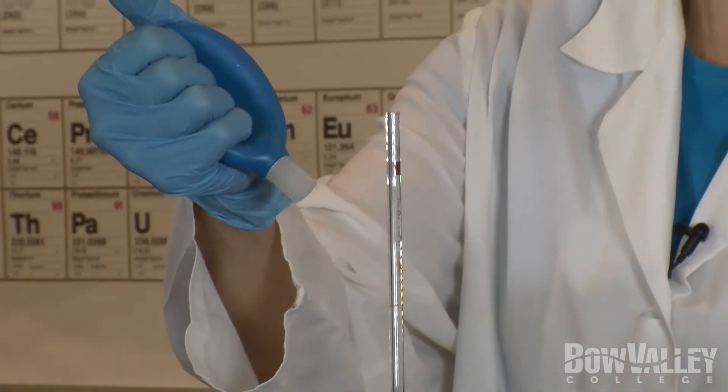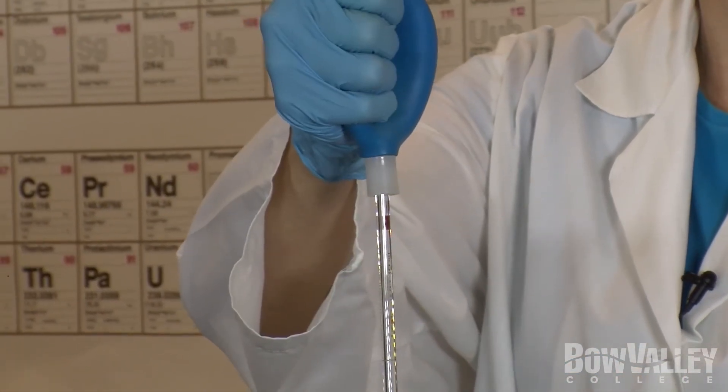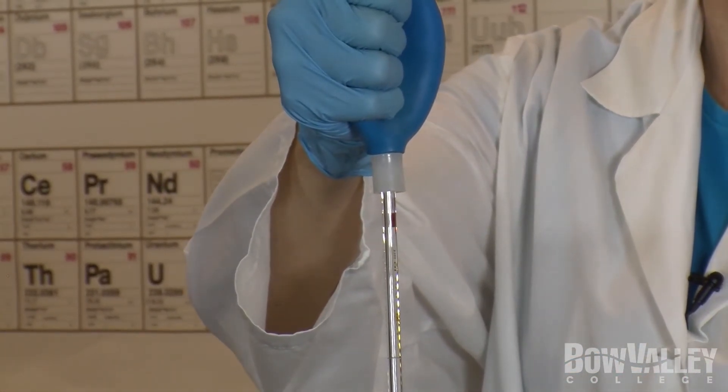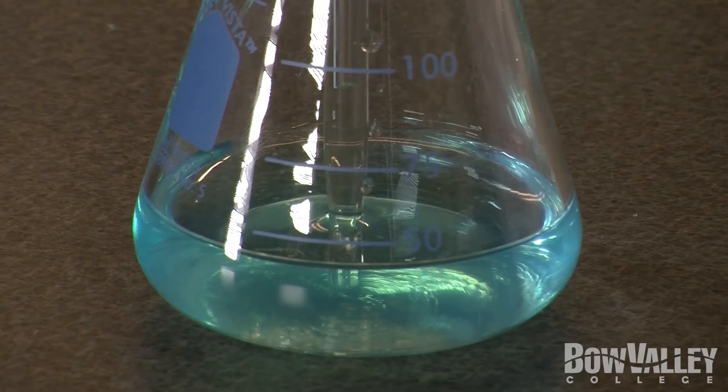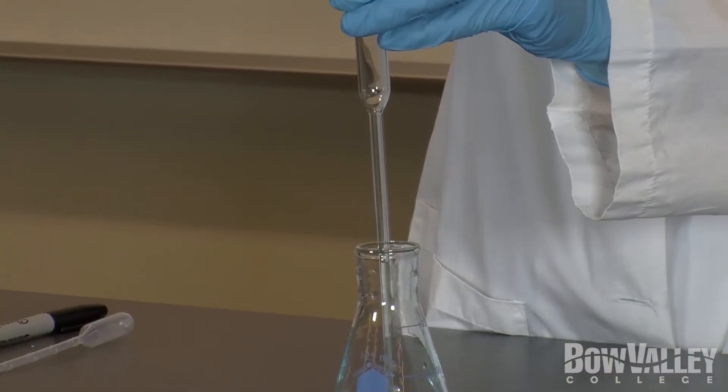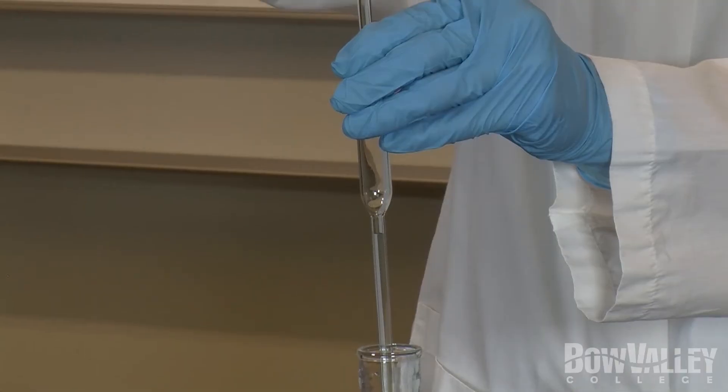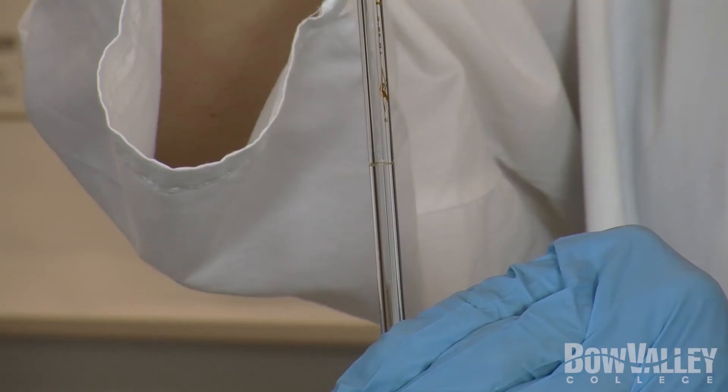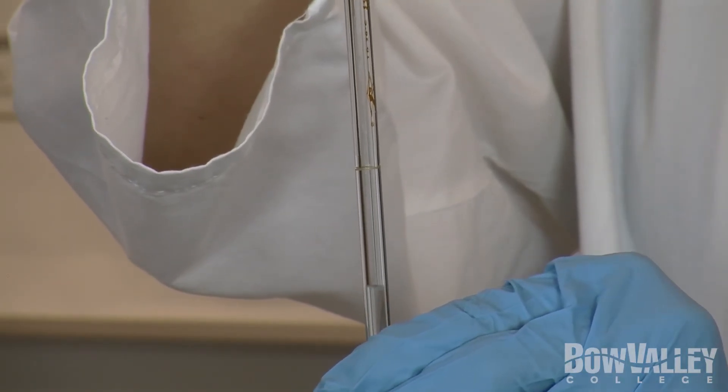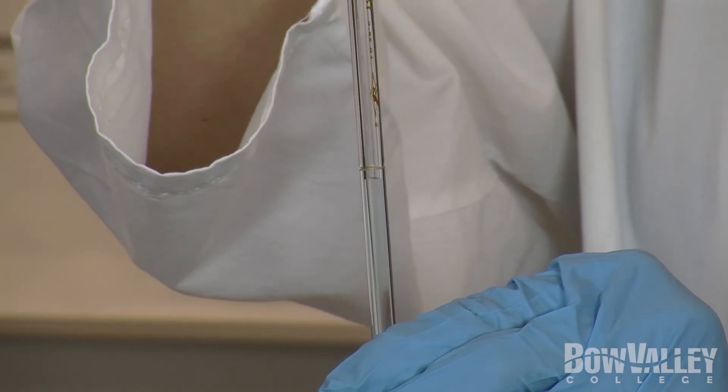Squeeze the pipette bulb, then securely place over the end of the pipette. Slowly release your grip on the bulb and allow the liquid to rise up the pipette. You should allow the liquid to rise above the line marked on the pipette, but stop before the liquid level reaches the bulb.